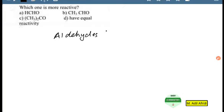Aldehydes are more reactive than ketones. This means choice C and D are eliminated. Now we're left with formaldehyde choice A and acetaldehyde choice B.